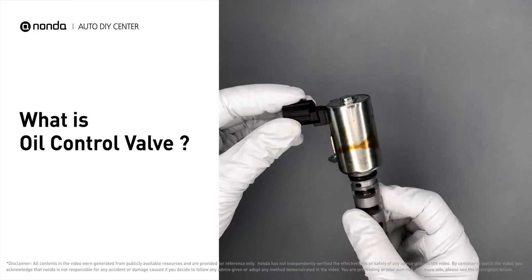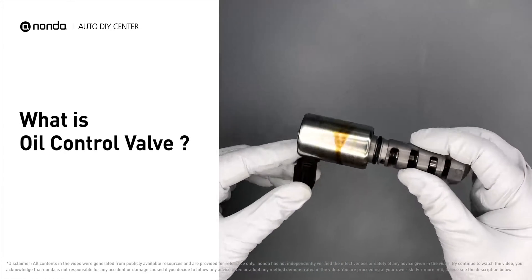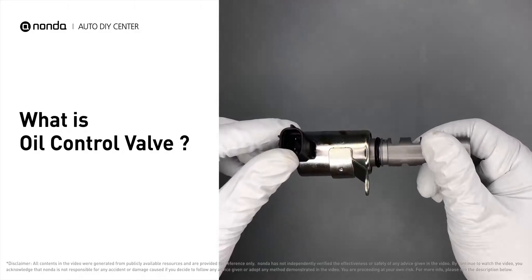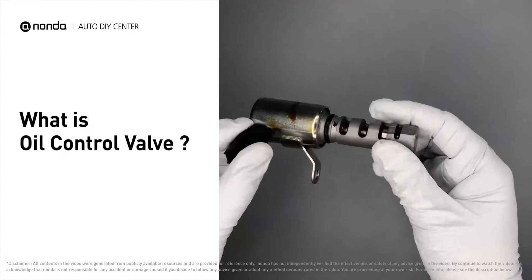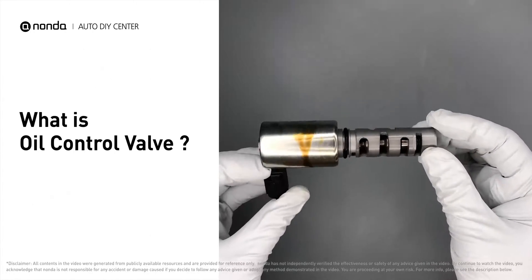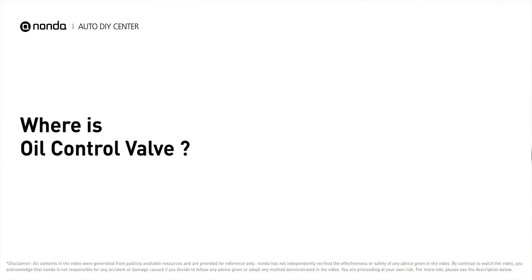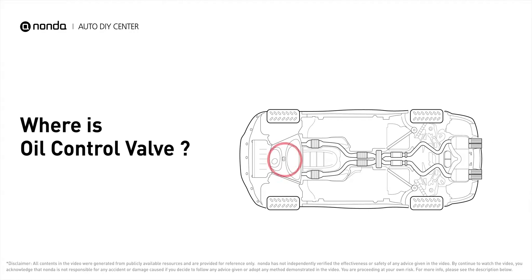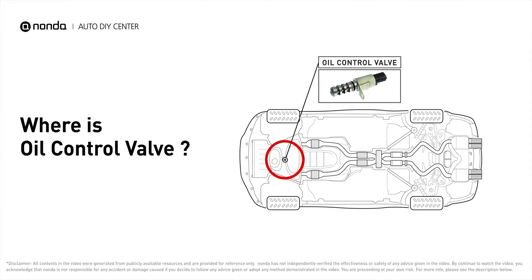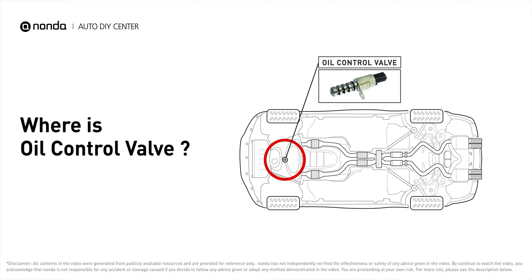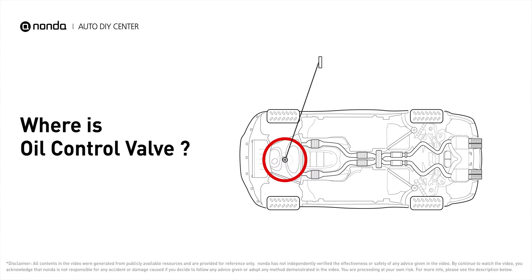The oil control valve, or OCV, is responsible for controlling the amount of oil that passes into the variable valve timing gears. The oil control valve is not found in all vehicles, but it is usually located in cars that have engines with variable valve timing systems.